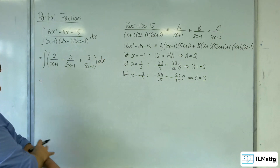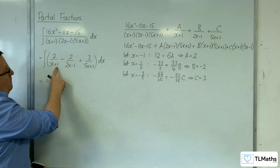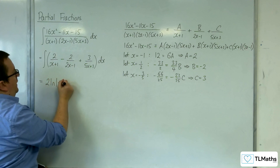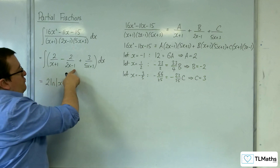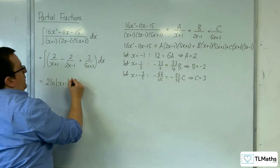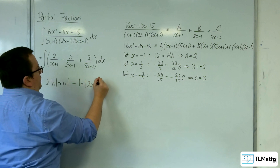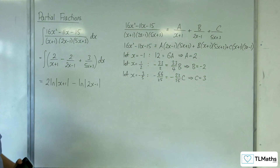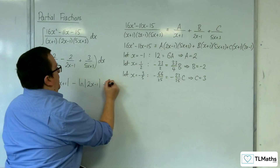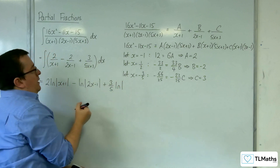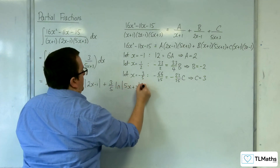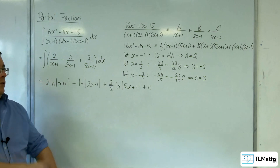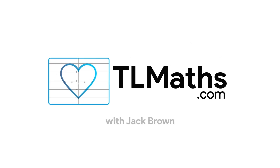Now I need to integrate each term. For 2 over x plus 1, the denominator differentiates to 1, so this gives 2 ln|x plus 1|. The denominator of 2x minus 1 differentiates to 2, which matches the numerator, so this gives minus ln|2x minus 1|. The denominator 5x plus 3 differentiates to 5, and we have 3, which is 3 fifths of what we need, so this gives plus 3 fifths ln|5x plus 3|, plus the constant of integration. That is the result we were looking for.